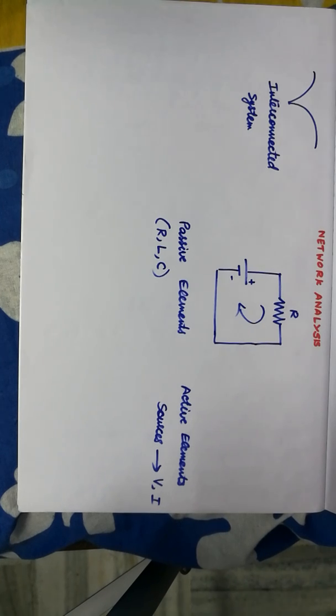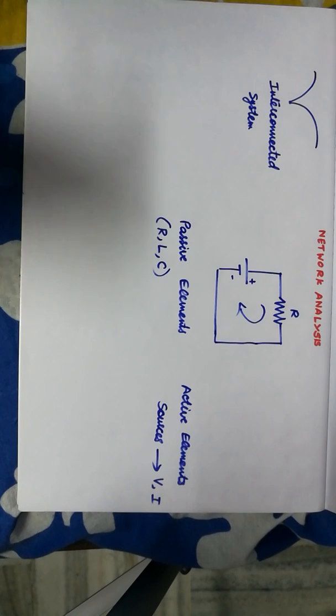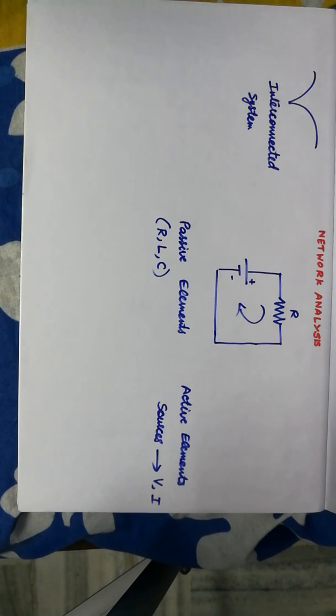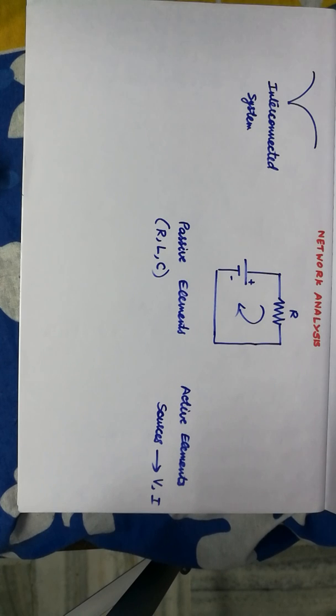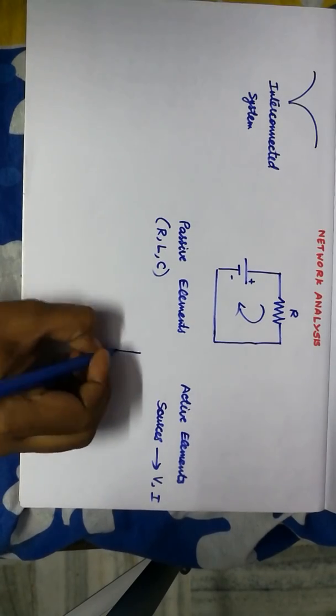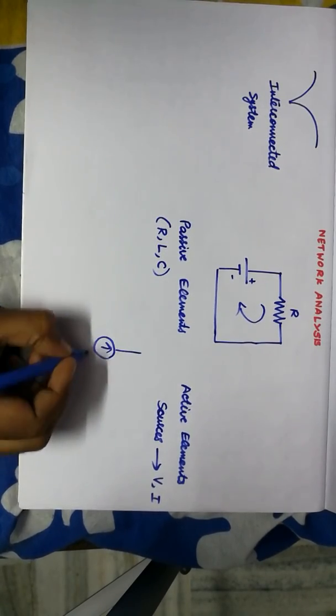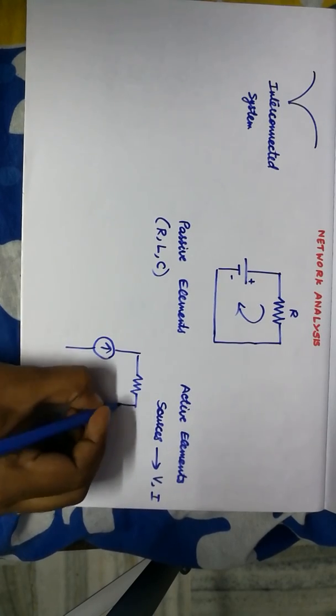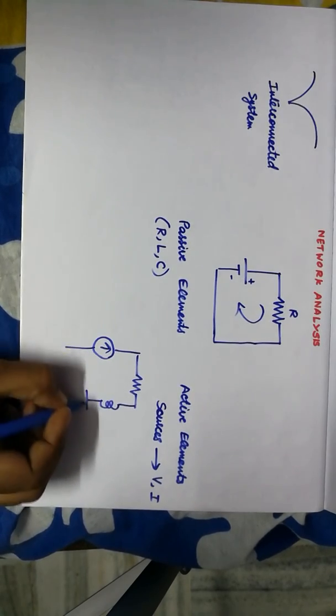Now, in network analysis, we are going to deal with analyzing different kinds of circuits using passive elements that we have. A circuit may simply have an R or it may have more than a single resistor or it may have a combination of R and L or there could be all three passive elements in the same circuit. Or we could also have, say, for example, a current source like this in series with a resistor, an inductor and a capacitor.